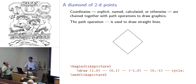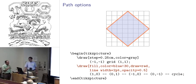Coordinates can be given in lots of different ways, either explicitly, or they can be referred to as a named coordinate, or you can calculate it using some math. Then when you want to draw your graphics, you chain these coordinates together with a variety of path operations. In this case, we're going to take a look at the path operation that consists of just two hyphens which represents a straight line. Here we're just drawing this diamond starting off at position 1, 0, going around to the other vertices. Cycle is just a special coordinate which refers to wherever you began this particular path.